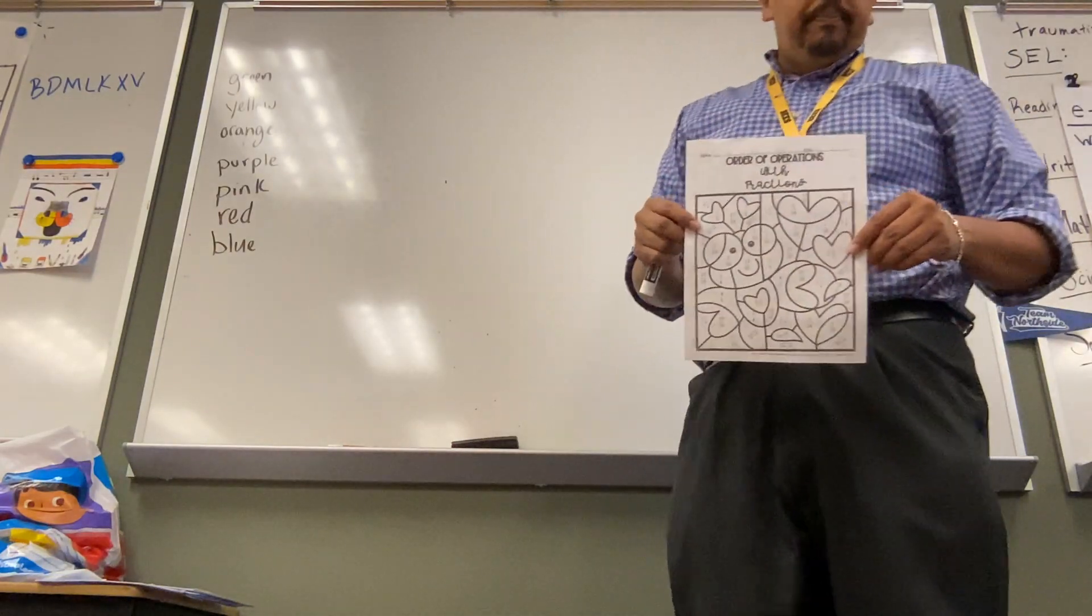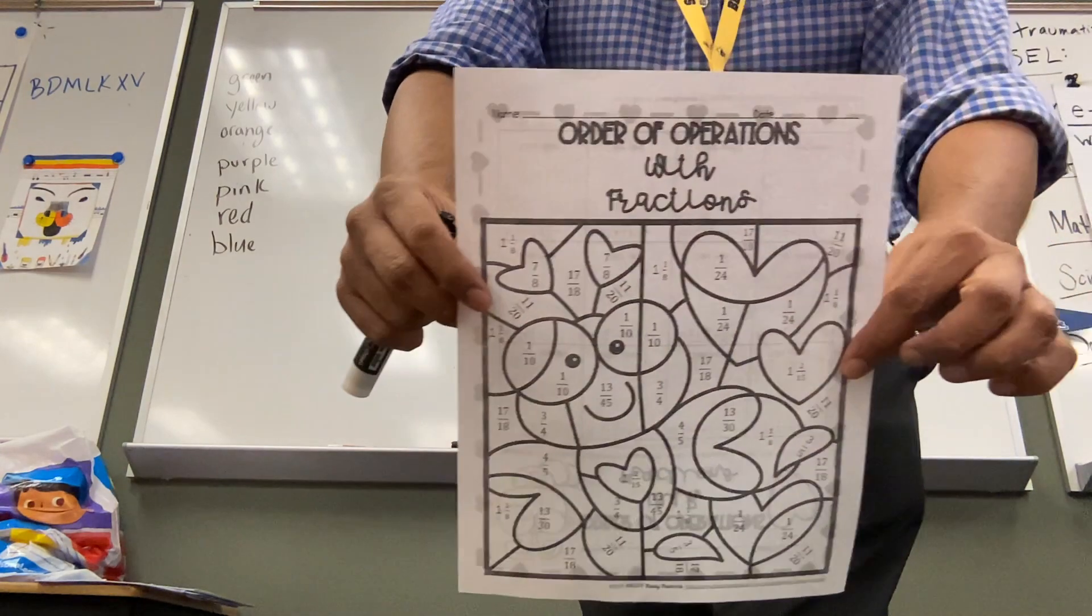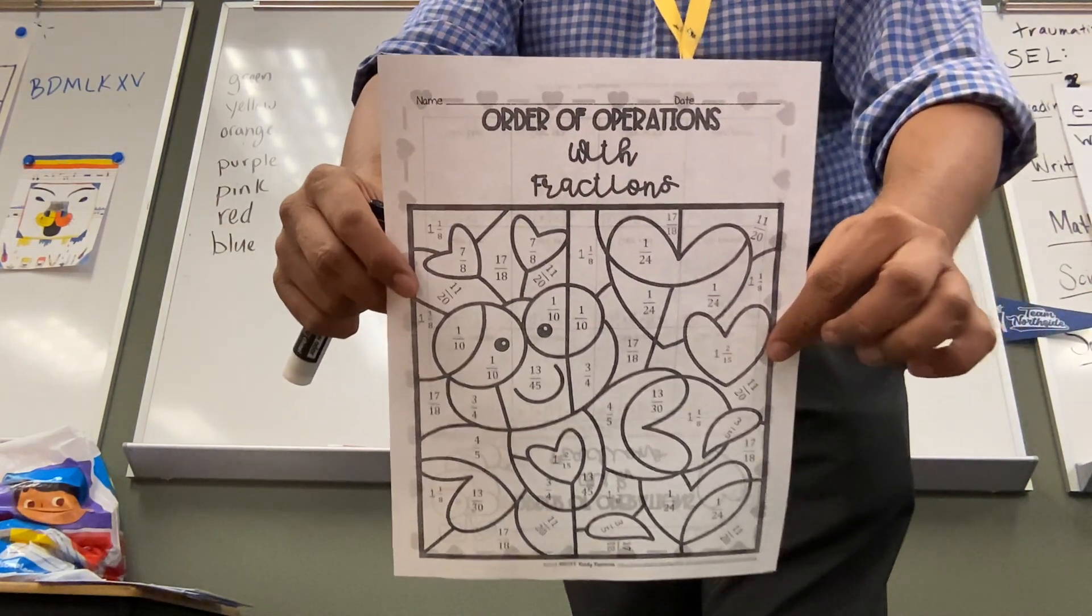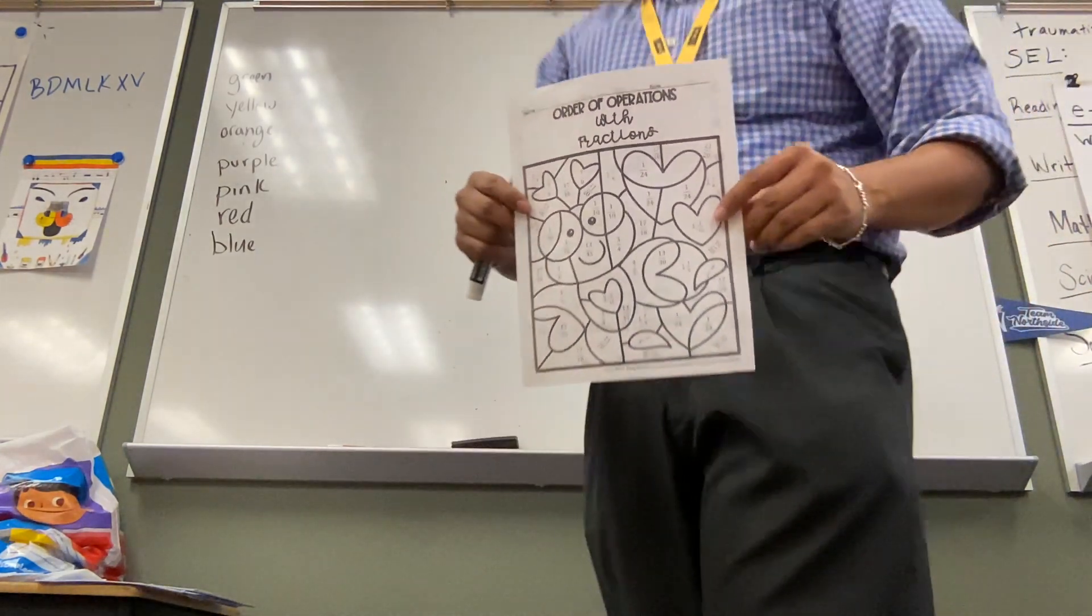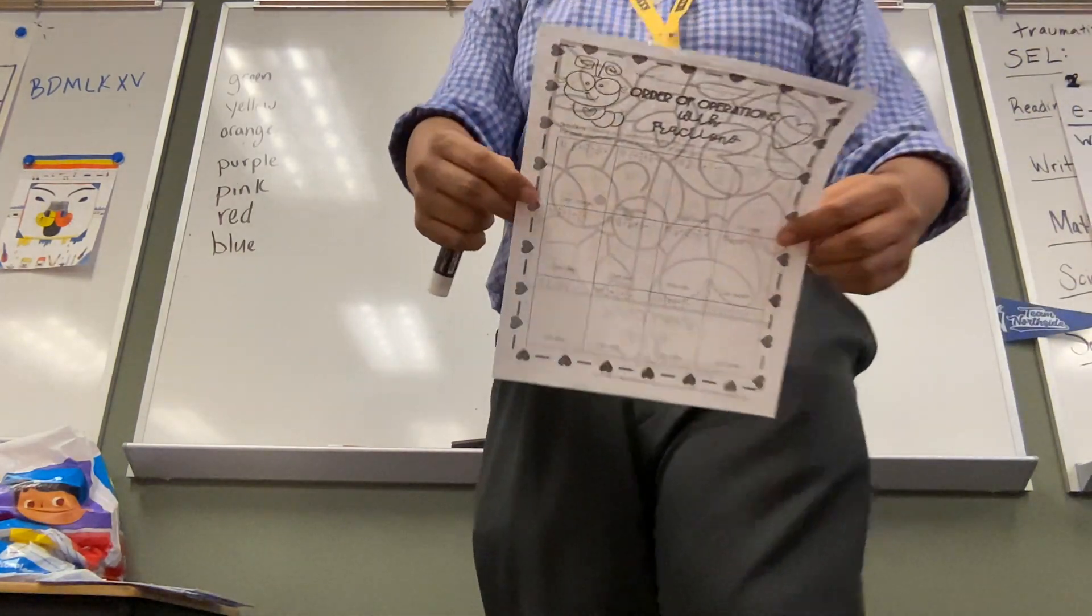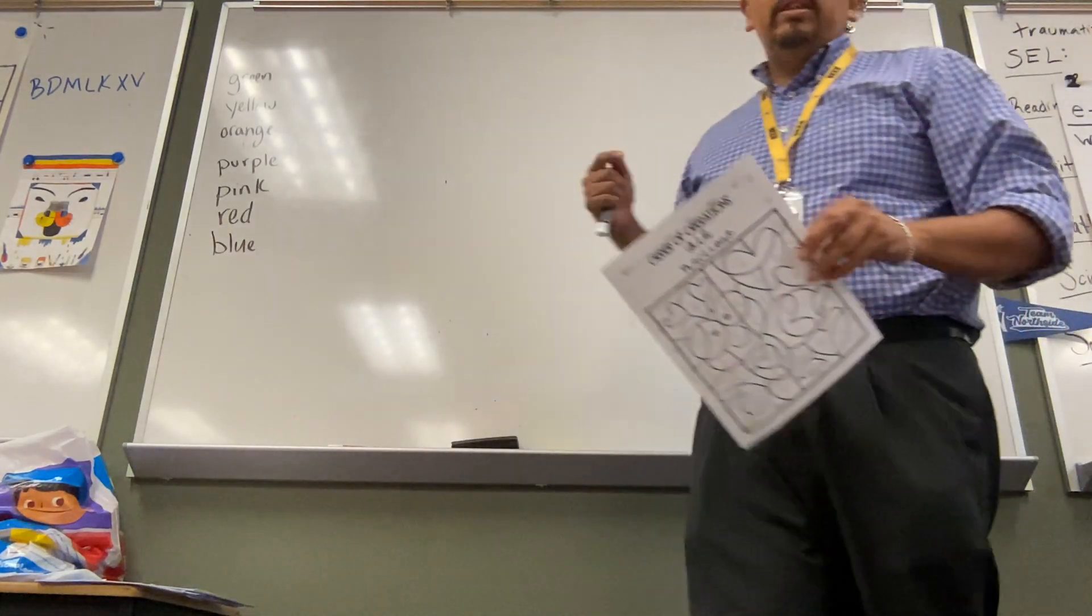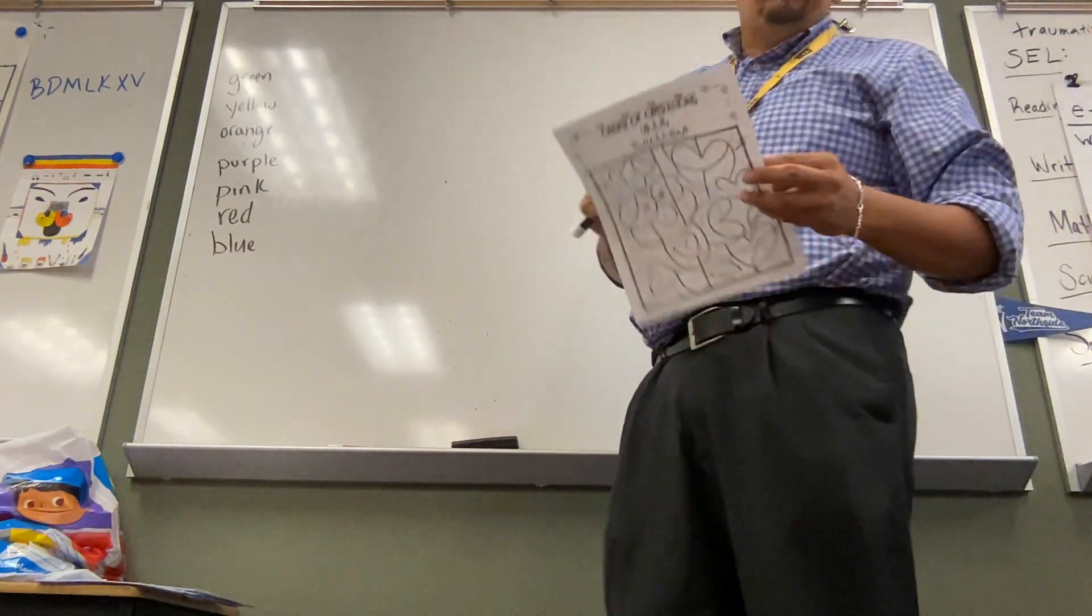Parents, I'm holding up this little sheet here because we are going to use this as a review. Looks like this. If they say they don't have homework, it's a big lie. This is what we're doing for homework. But I'm going to explain it. We are not coloring this until this part of the sheet is finished. So we're starting this in class.